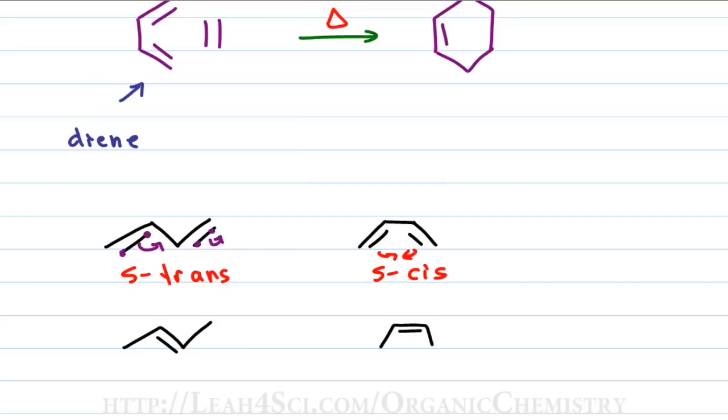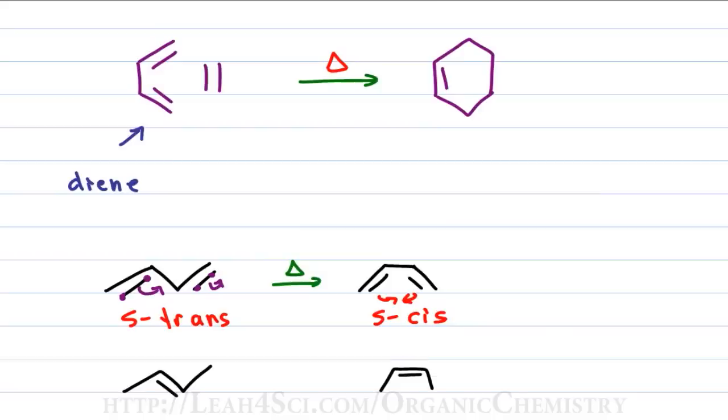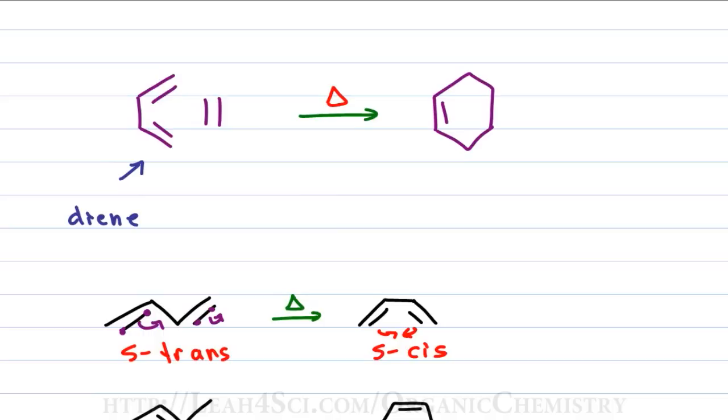In order to convert from the S-trans to the S-cis, you need some heat. The heat will destabilize the molecule, interrupt the resonance enough to allow for that rotation to happen. But that works out nicely because the Diels Alder requires heat for the mechanism anyway. So, as long as the molecule is capable of rotation, the heat will help turn an S-trans into an S-cis.